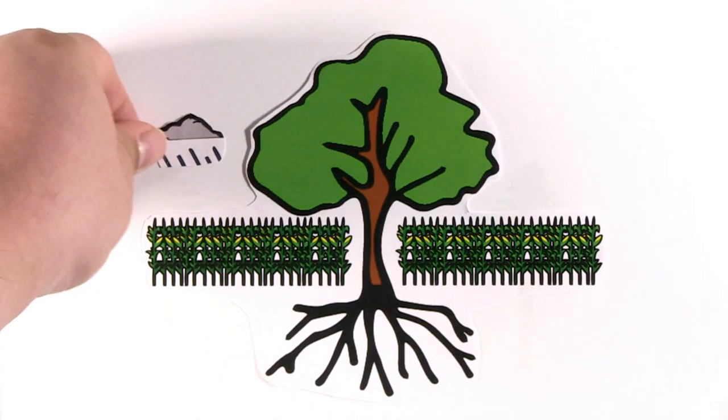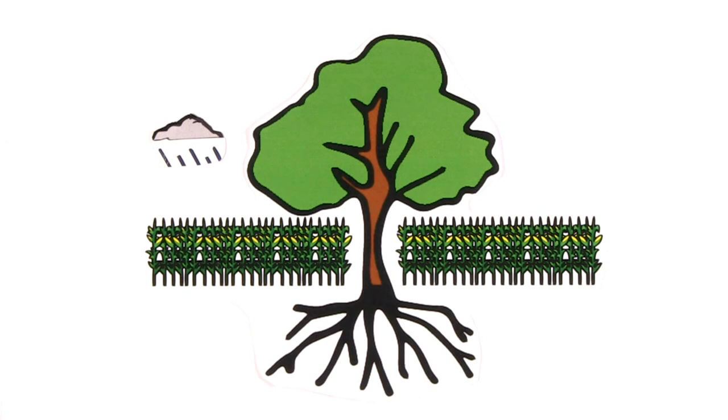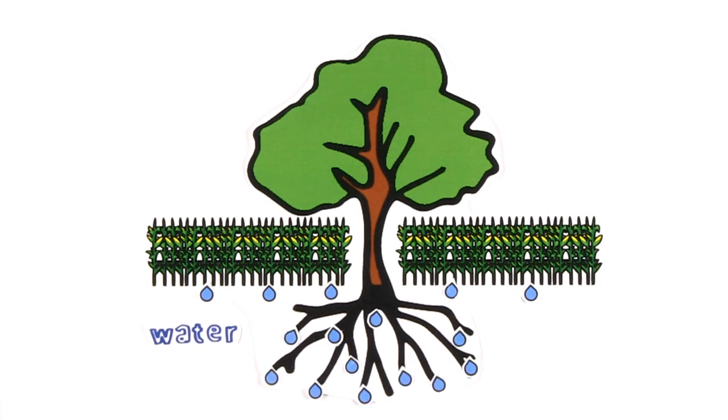Trees on farmlands can have a variety of positive effects on both crops and animals. As their roots extend much deeper than those of annual crops or pasture, water can more easily infiltrate into the ground, which leads to reduced waterlogging and runoff. As a result, erosion rates are significantly reduced.